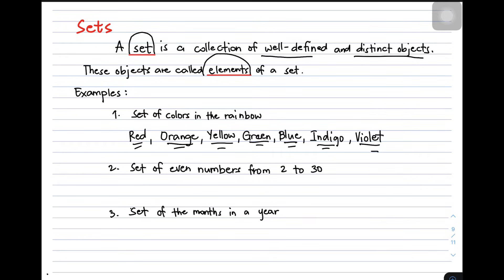What are the elements so we can say this set is distinct and well-defined? So the elements of this set are, it says numbers, even numbers from 2 to 30: 2, 4, 6, 8, 10, 12, 14.